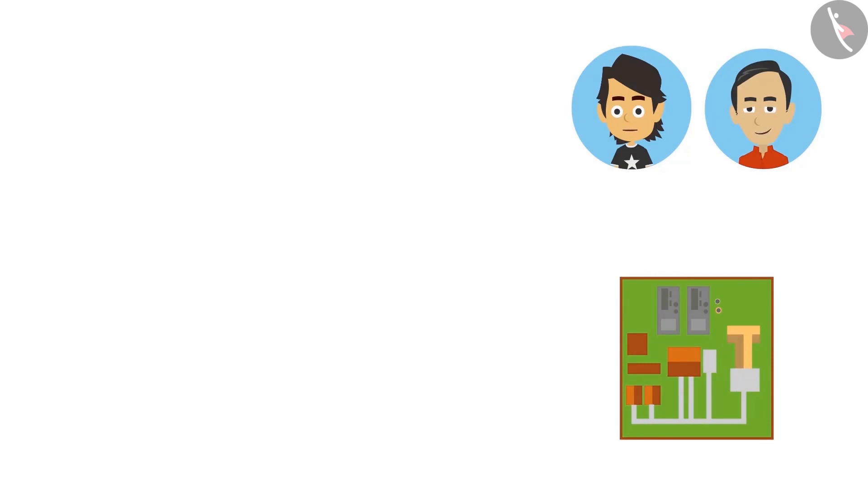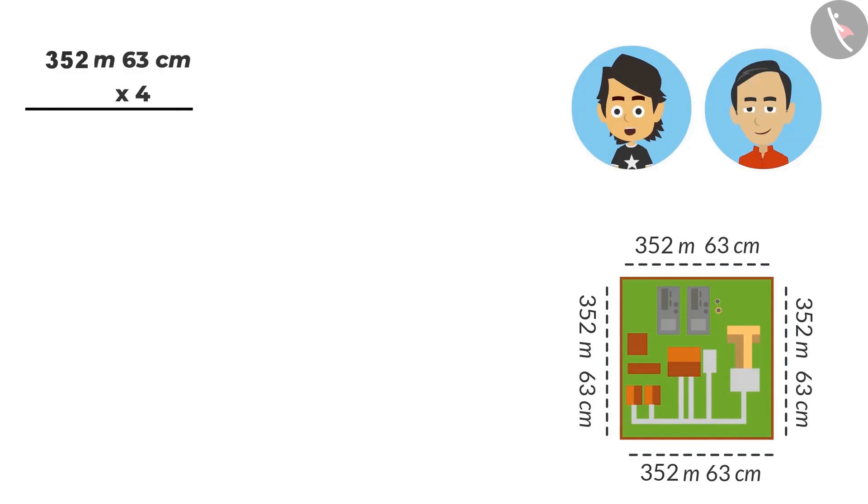Okay, the boundary of your office is a square and the length is the same on all sides. That is, 352 metres and 63 centimetres. So, to get the boundary's length, we will multiply it by 4.